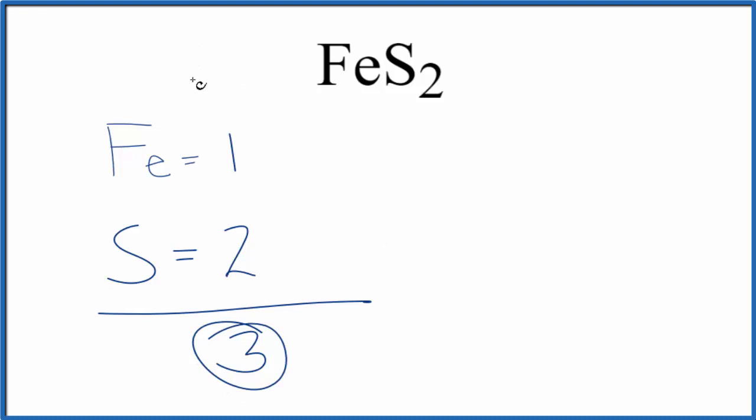If you were given one mole of FES2 and asked to figure out the number of atoms in one mole, for the iron, since we only have one iron atom here, we would just multiply that by Avogadro's number, and that would give us the number of atoms in one mole of iron in FES2.